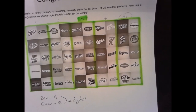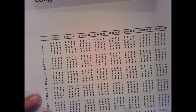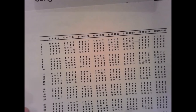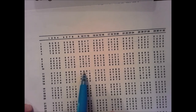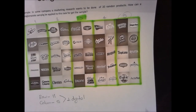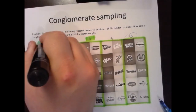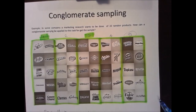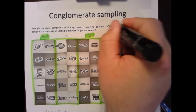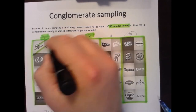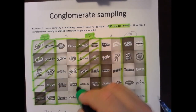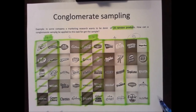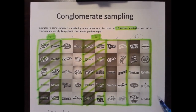Continuing in row 11: 6 — no. Then 1 — yes, group 1 is the second selected group. We already have our 20 random products: the first 10 from group 3 and the second 10 from group 1. This is the conglomerate sampling method.